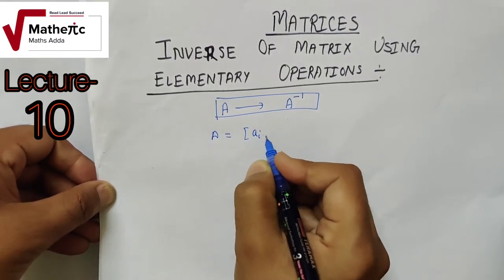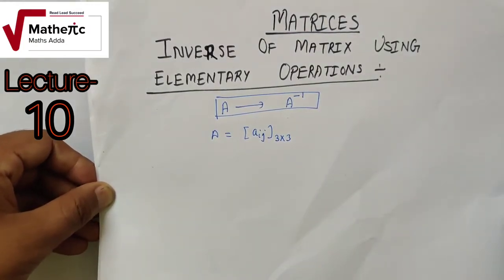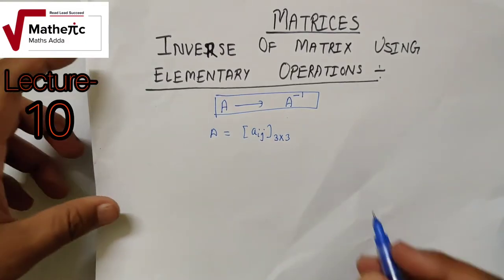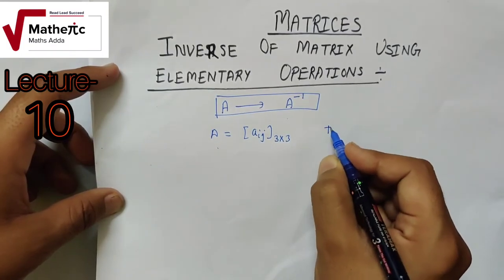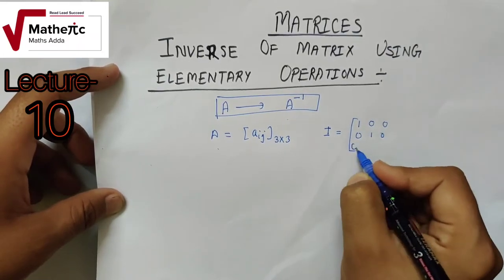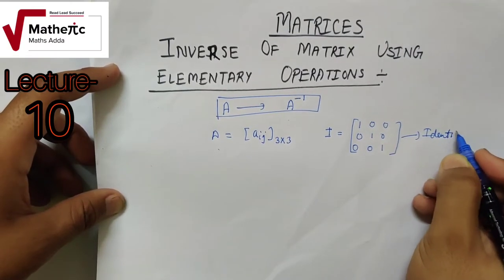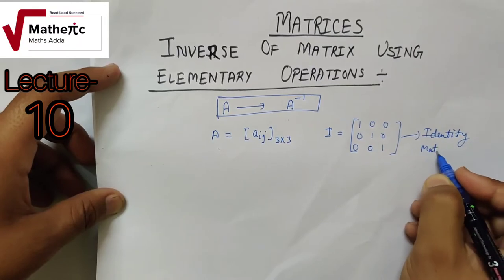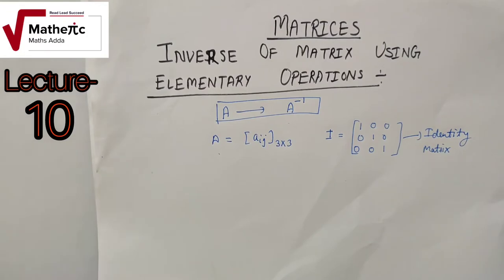So let us understand the information about the identity matrix. The inverse will be of a 3 by 3 matrix. The 3 by 3 identity matrix is: 1 0 0 / 0 1 0 / 0 0 1. We have to use the identity matrix, as I have told you in the previous videos.